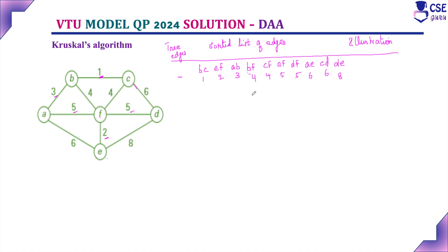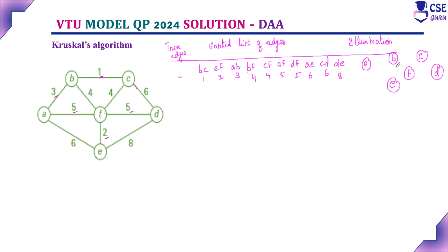The next step is to create a disjoint set data structure for this given graph. Here we consider only the vertices — A, B, C, D, E, F — without considering any edges. This is the disjoint set data structure.